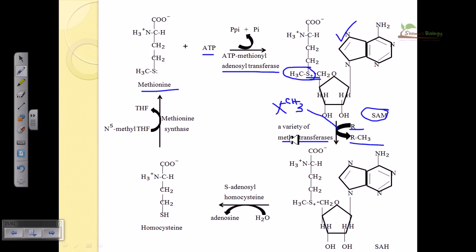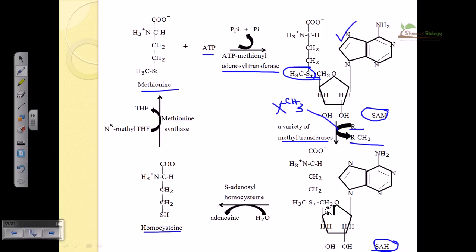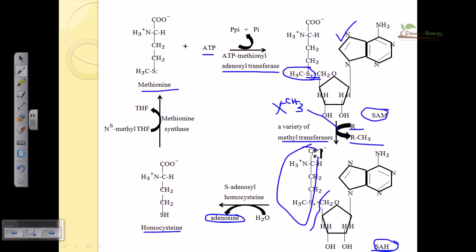This transfer is done with the help of the enzyme methyltransferase — named because it transfers the methyl group. After transfer of the methyl group to R, we generate S-adenosylhomocysteine (SAH), because S-Adenosylmethionine is converted into SAH after losing its CH3. SAH can then be converted back: to remove the adenosine group, water is added and hydrolysis of the bond occurs, breaking the adenosine away.